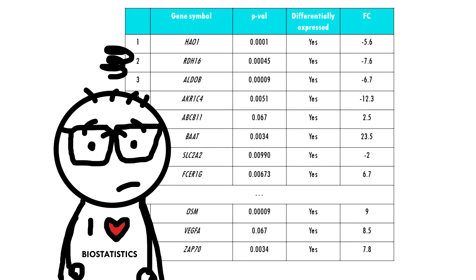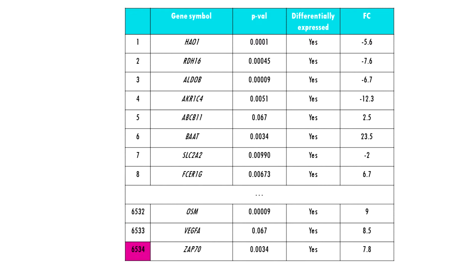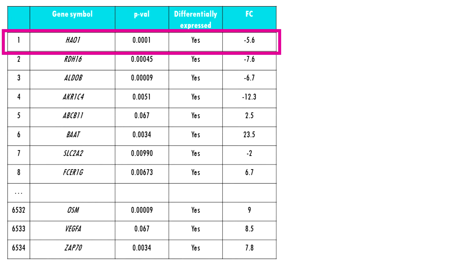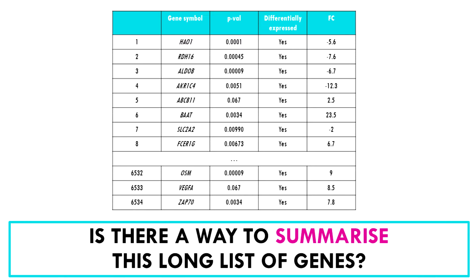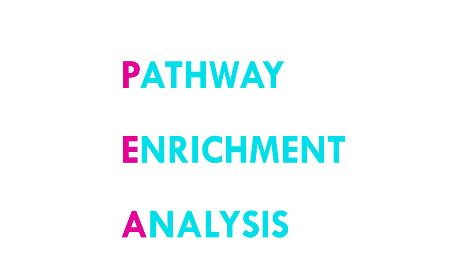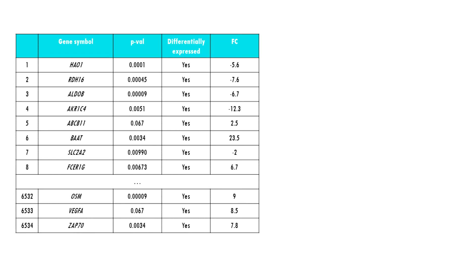How do we even start interpreting this? We could get a few students to manually search each gene individually, but that might take a while. Is there a better way to summarize this long list of genes and interpret hundreds of differentially expressed genes at once?